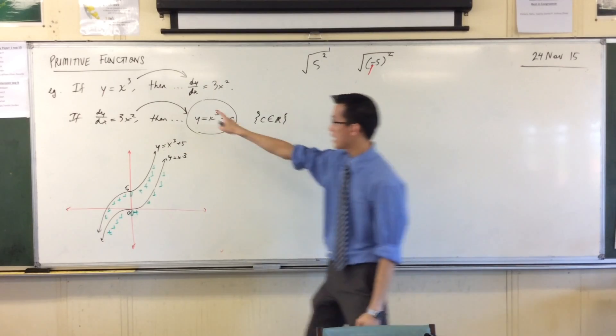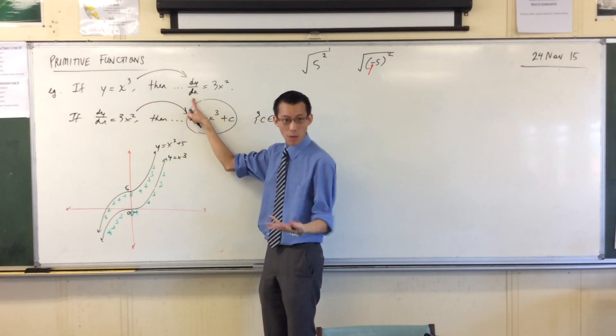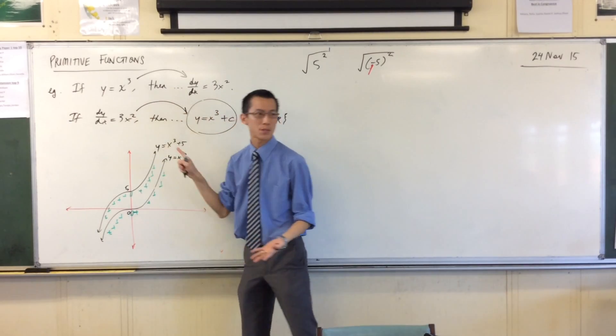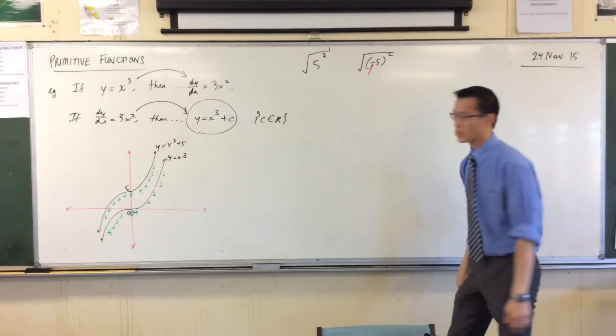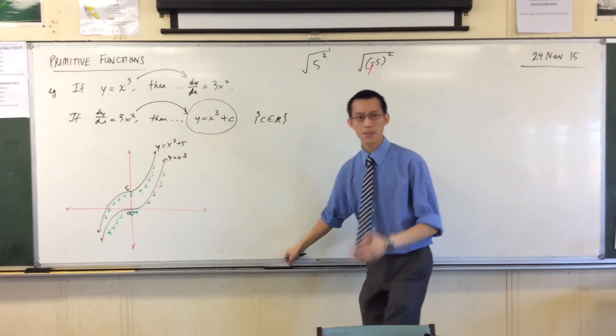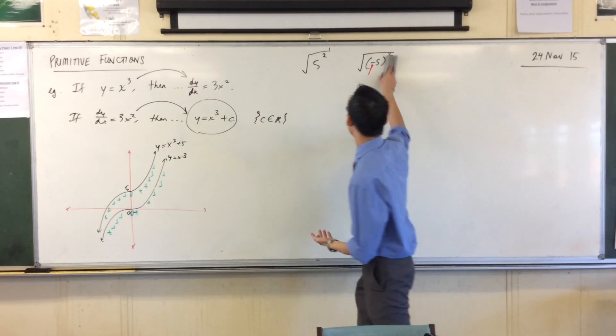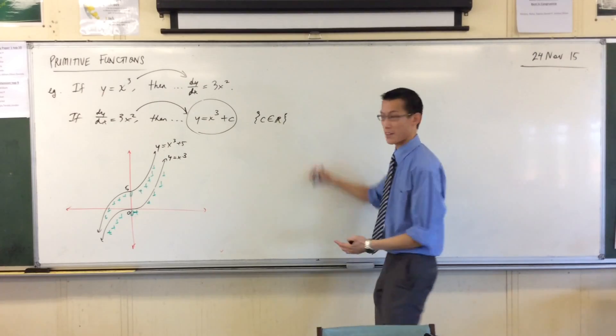So it stands to reason, if a rule takes me from here to here, some kind of rule ought to be able to take me in the opposite direction. So new little subheading underneath this, rules for anti-differentiation. We're going to try and codify some of this.